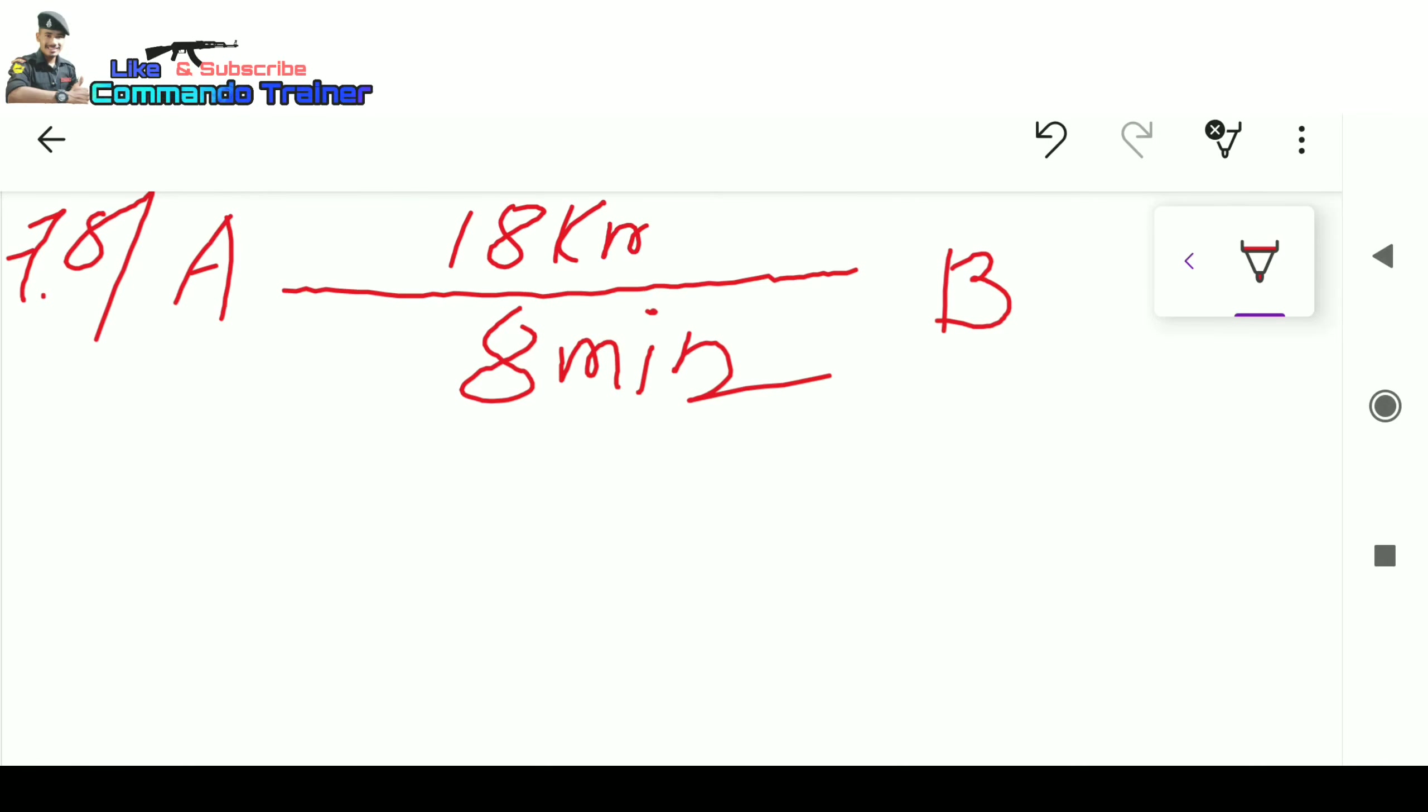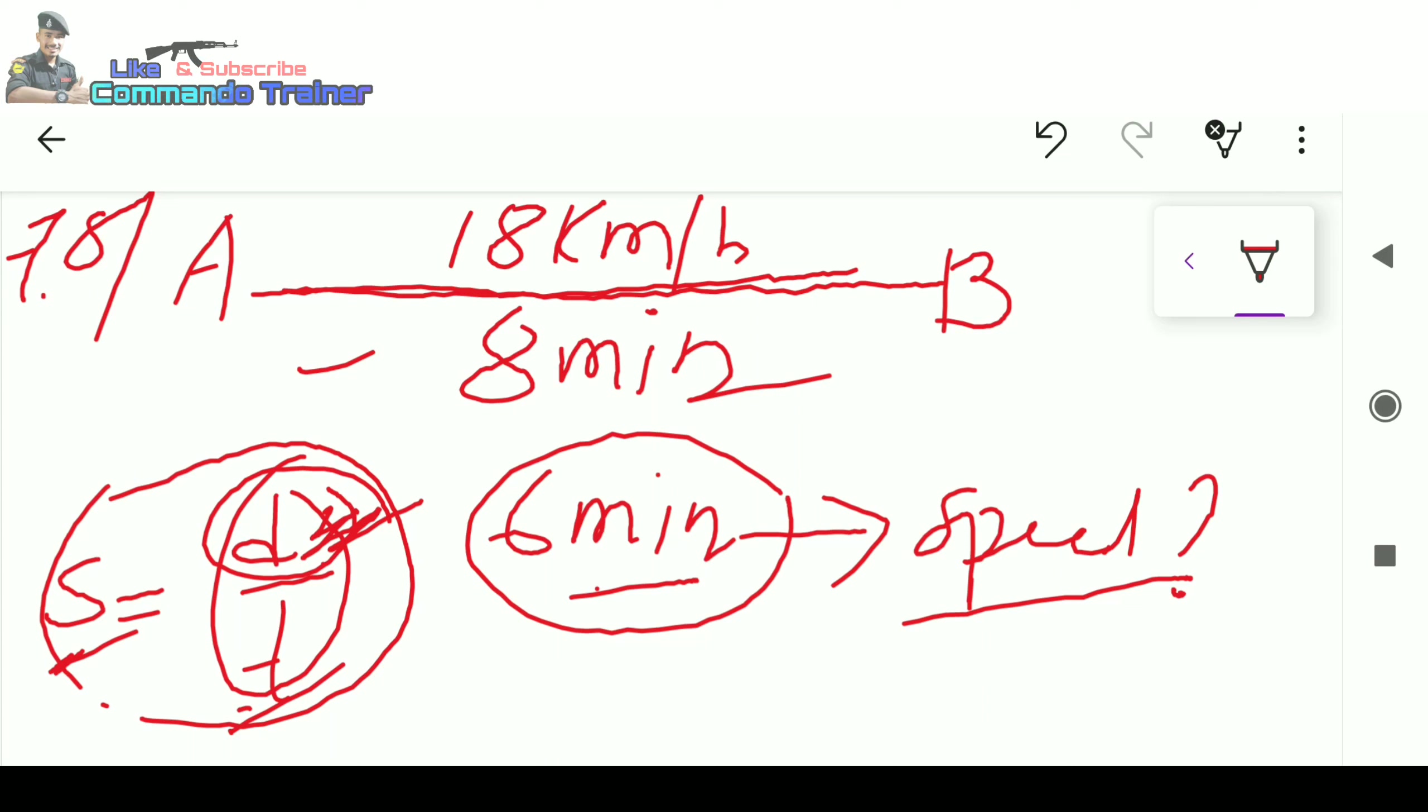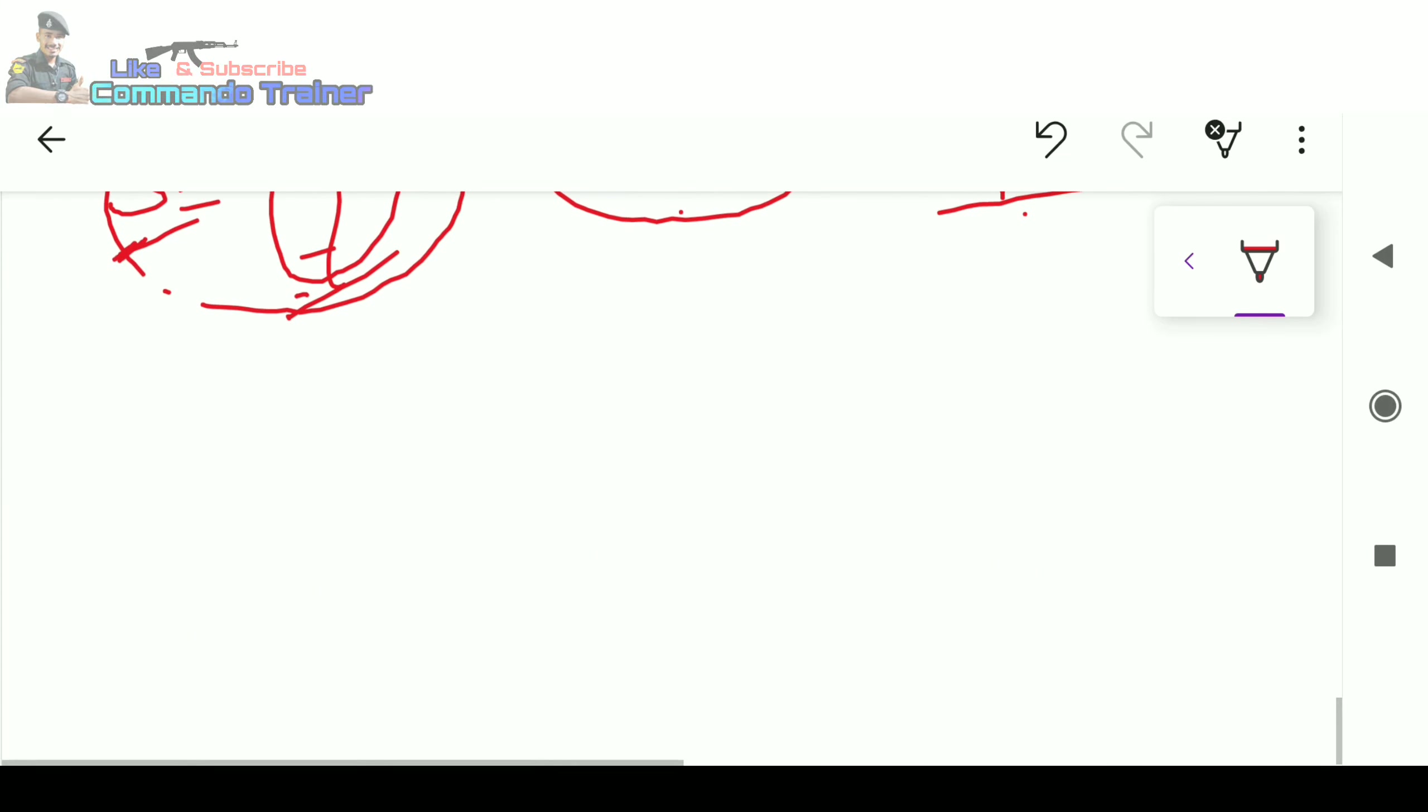Speed is 18 km per hour. The formula is speed is equal to distance divided by time. The distance is equal to speed into time.